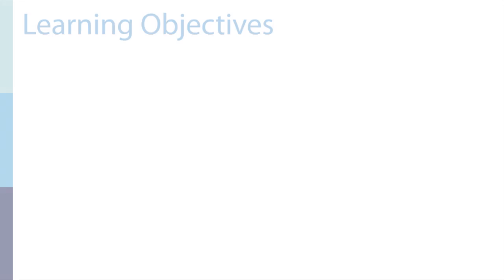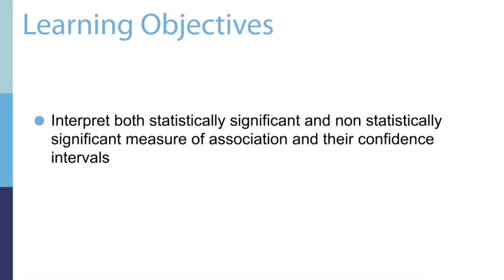In this segment, we're going to talk about confidence intervals. Confidence intervals help us understand the range of variability or uncertainty in either our measure of association or our measure of disease occurrence. After you have reviewed this segment, you should be able to interpret both statistically significant and non-statistically significant measures of association or measures of disease occurrence and their confidence intervals.